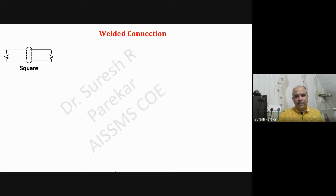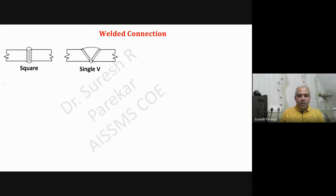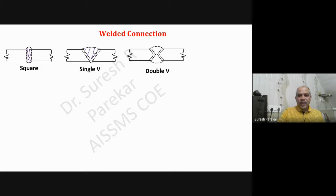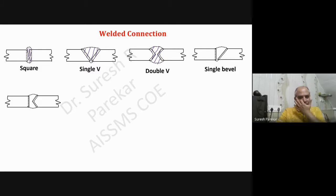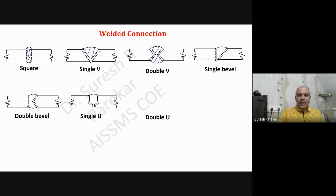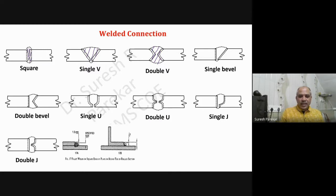Part four is weld and welded connection. We have first square weld, then single V weld - the weld is the portion inside the dotted line. Then double V. We also have single bevel, double bevel, single U, single J, and double J welds.